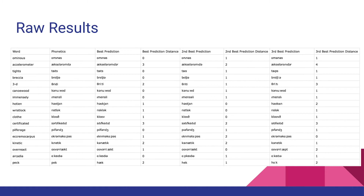Now let's see how the model performs on the test set. The primary output of the neural network shows each word with its true IPA label, the best prediction and its edit distance to the true label, the second best prediction and its edit distance, and the third best prediction with its edit distance.